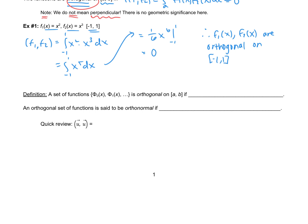That leads us to this definition: a set of functions is orthogonal on a to b if the inner product — the integral from a to b — is equal to zero for m not equal to n. So a set of functions is orthogonal if you choose any pair of them and the inner product gives you zero; that needs to be true for every single pair. An orthogonal set of functions is said to be orthonormal if the magnitude of each of those functions is one.